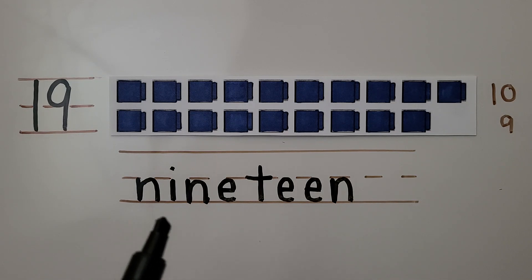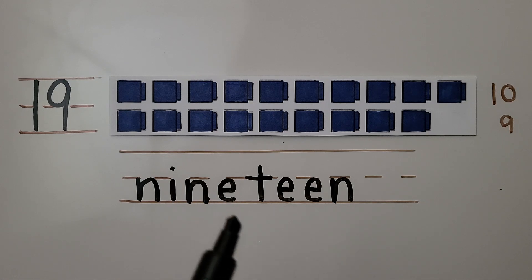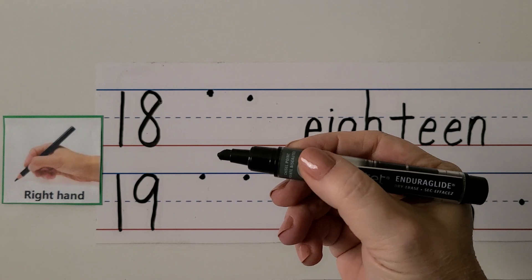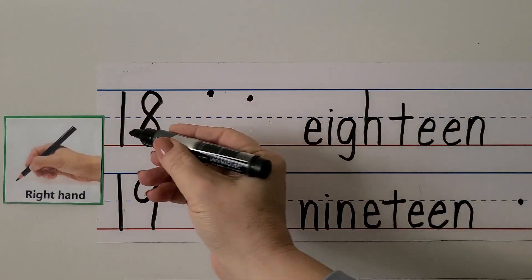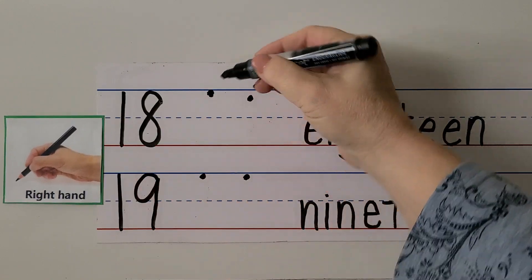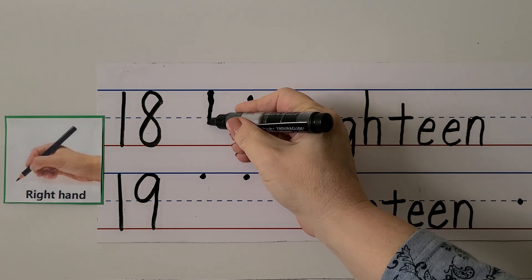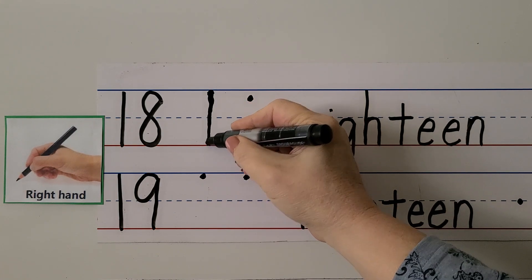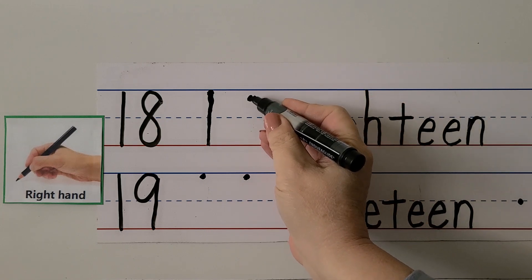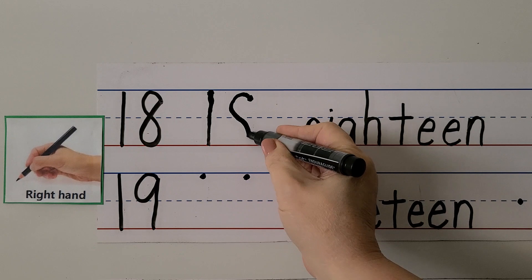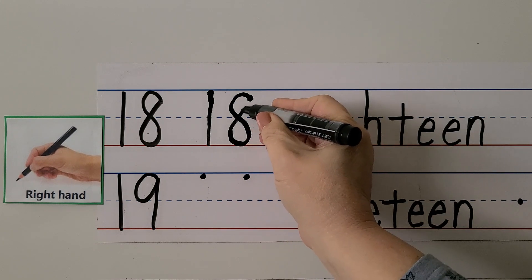We can write the number 18 with our right hand. We're gonna make a 1 with an 8 next to it. We start at this top line and go straight down. We make our 8. We're gonna make an S and then we're gonna come back up to the top like that. 18.